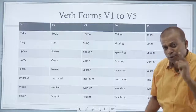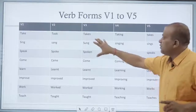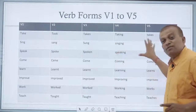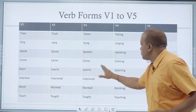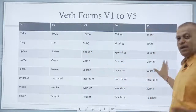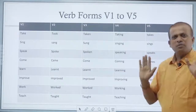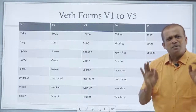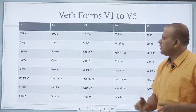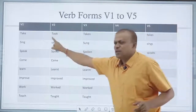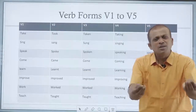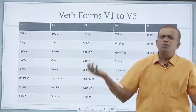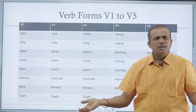I told you that we will have only 5 columns: 1, 2, 3, 4, 5. My dear friends, very important. Now, what is important in English? To use the words according to time.